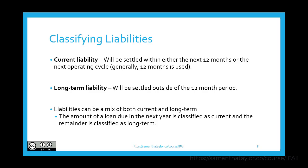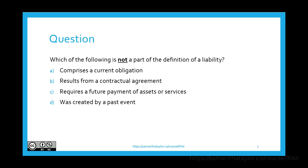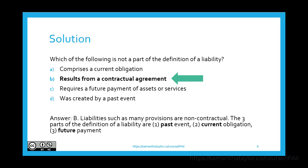Time for our question. Which of the following is not a part of the definition of a liability? — 'Results from a contractual agreement.' The answer: a contractual agreement may fall under the liability umbrella, but in order to be defined as a liability it needs to meet past, present, future — the result of a past transaction or event that represents a current obligation we cannot get out of that will result in the future outflow of economic resources.